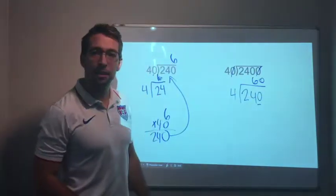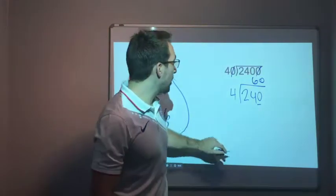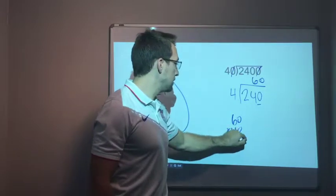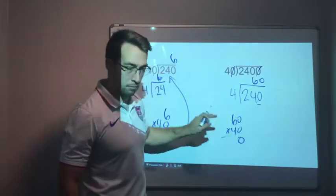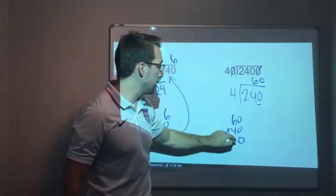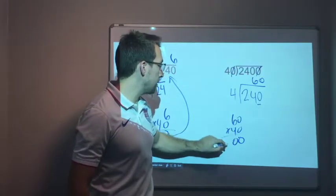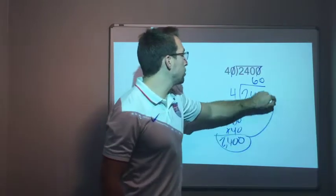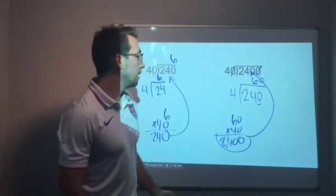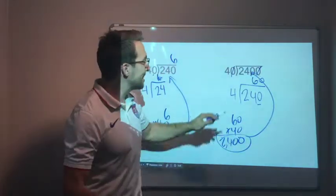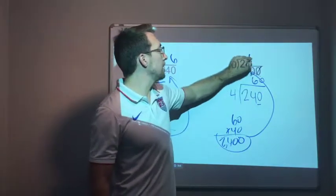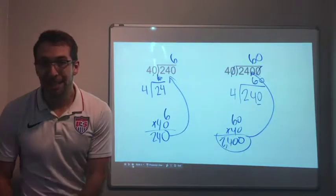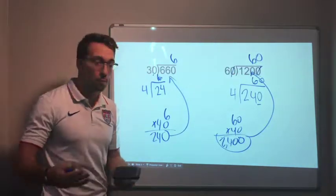Now we have one zero there. Sixty, that's my answer. 60 times 40, zero because we got the zero so we scoot over one, and then six times four is 24, 2400. That's my answer. 60. 40 goes into 2400 sixty times. This is a trick to help simplify.